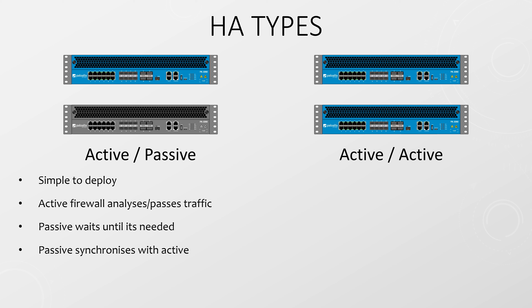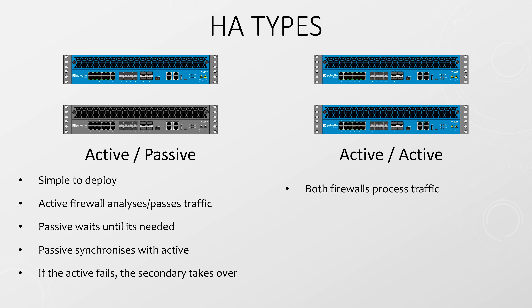The passive firewall will synchronize information from the active firewall, such as firewall configuration, session information, and things like this. If the active firewall fails, the passive firewall is there to take over. The alternative option, active-active, has both firewalls processing traffic at the same time — that is, they share the load.